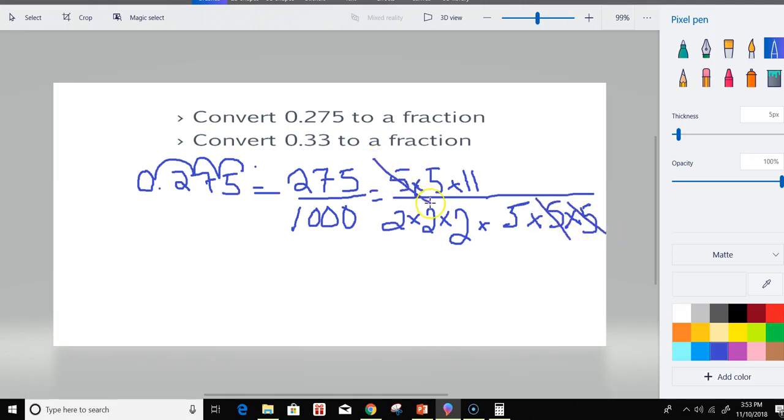5 and the 5 go away, 2 on the top and 2 on the bottom. And what we're left over is 11 on the top, and then on the bottom, we have 2 times 2, which is 4. 4 times 2 is 8, and 8 times 5 is 40.